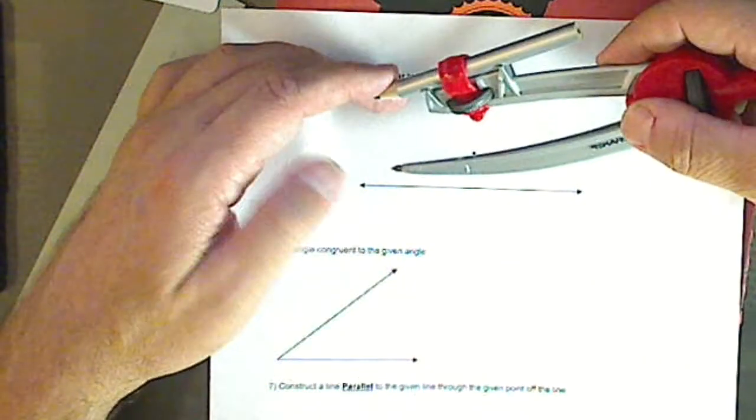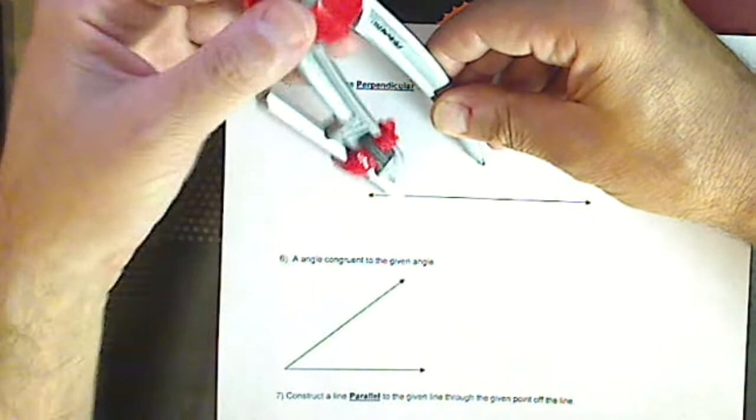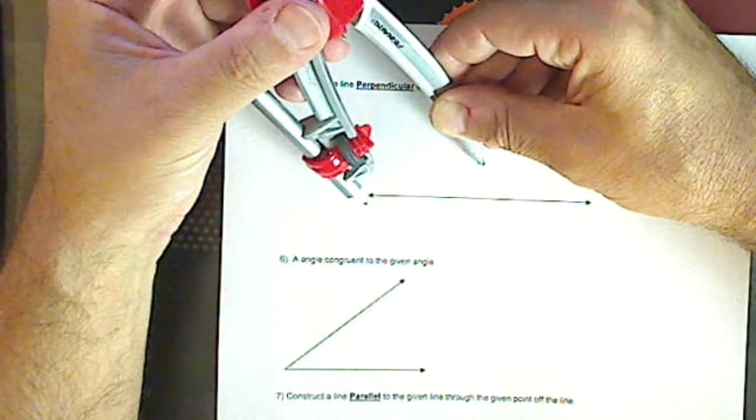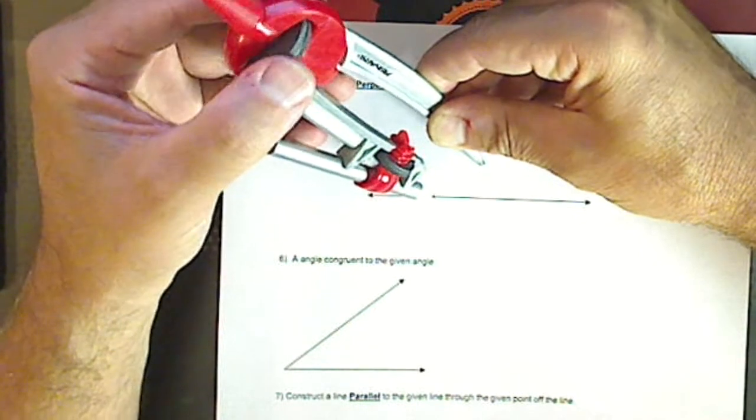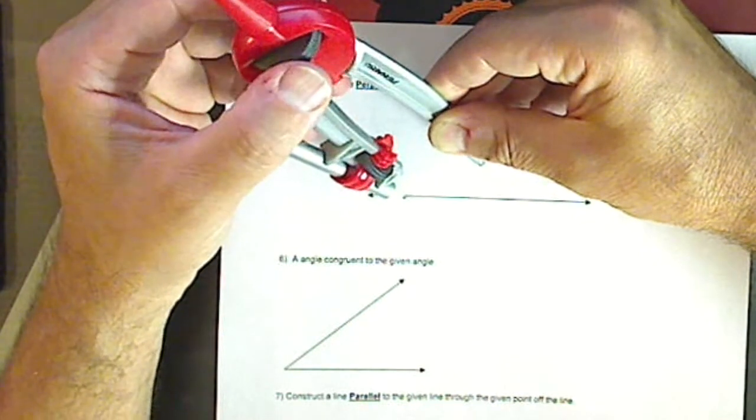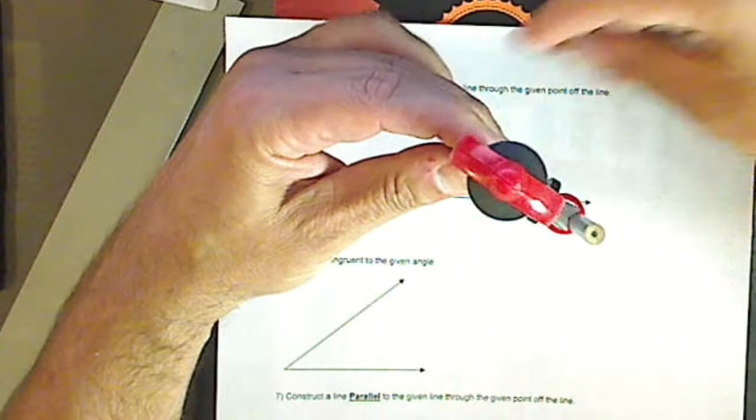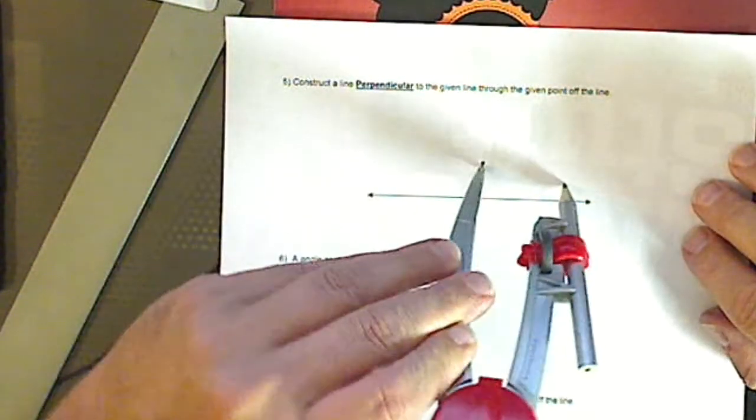Again, we use our compass. We use our setting. I don't want it too big where it's going past the arrowhead, and I don't want it too short where I'm working on top of myself, so I set it somewhere where it's a comfortable distance from each arrowhead ending.